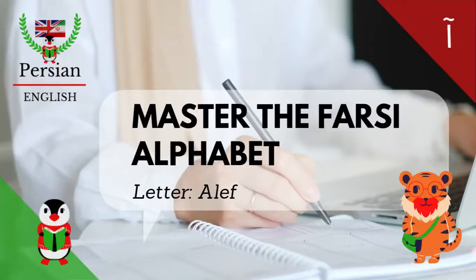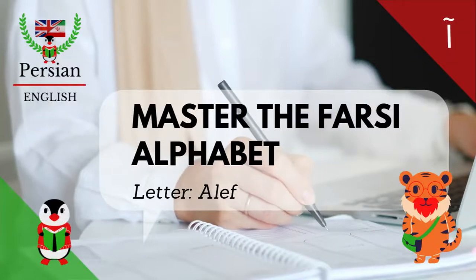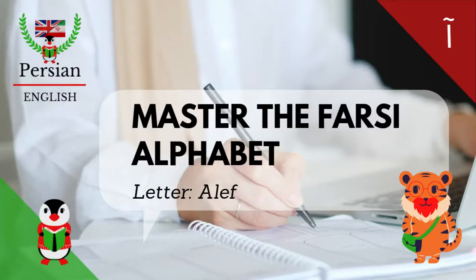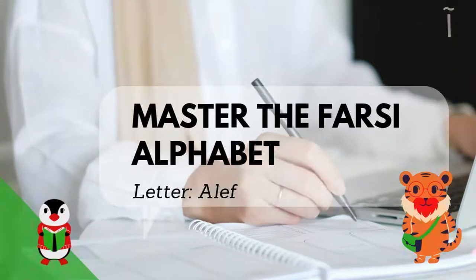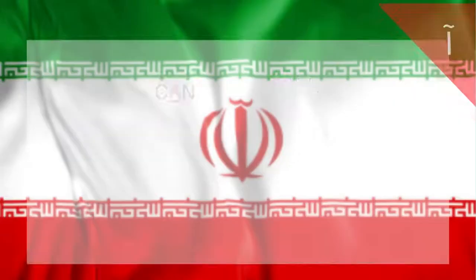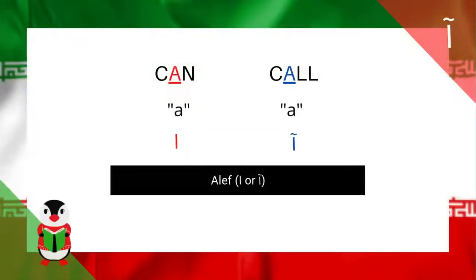Alphabet. Letter. Aleph. The letter Aleph can be pronounced in two main ways in Farsi. The first is the short A, as we're using the word 'can' in English.